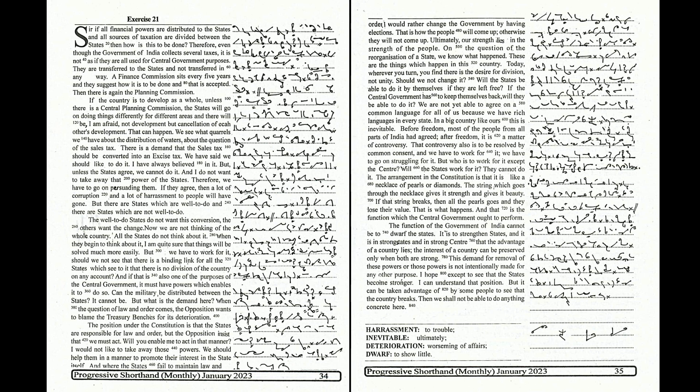The arrangement in the constitution is that it is like a necklace of pearls of diamonds. The string which goes through the necklace gives it strength and gives it beauty. If that string breaks, then all the pearls go and they lose their value. That is what happens. And that is the function which the central government ought to perform. The function of the government of India cannot be to dwarf the states.